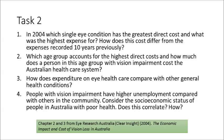For Task 2, read Chapters 2 and 3 from the Clear Insight Economic Impact report and consider these questions. 1: In 2004, which single eye condition has the greatest direct cost and what was the highest expense for? How does this cost differ from the expenses recorded 10 years previously? 2: Which age group accounts for the highest direct costs and how much does a person in this age group with vision impairment cost the Australian healthcare system? 3: How does expenditure on eye healthcare compare with other general health conditions? And 4: People with vision impairment have higher unemployment compared to others in the community — consider the socio-economic status of people in Australia with poor health. Does this correlate and how?